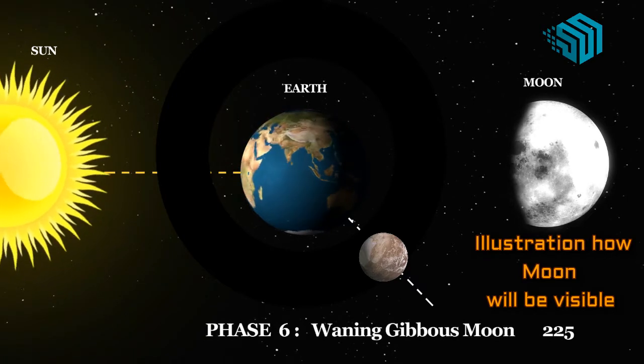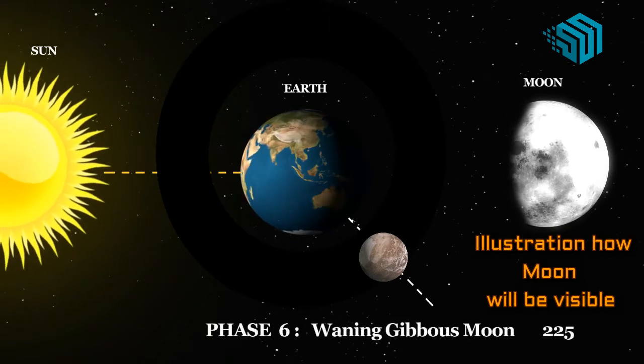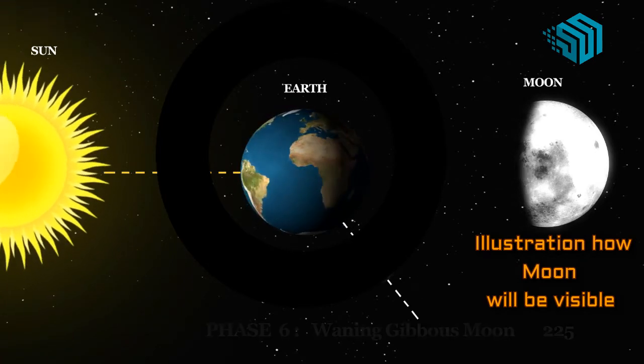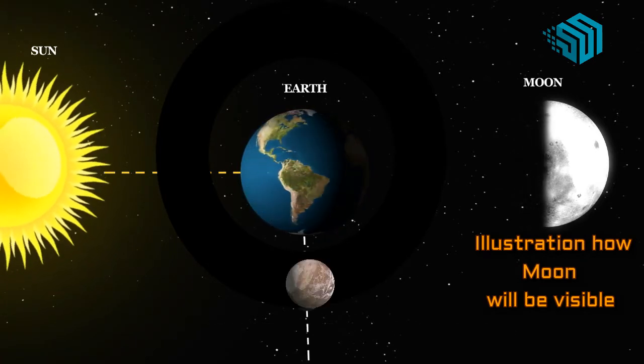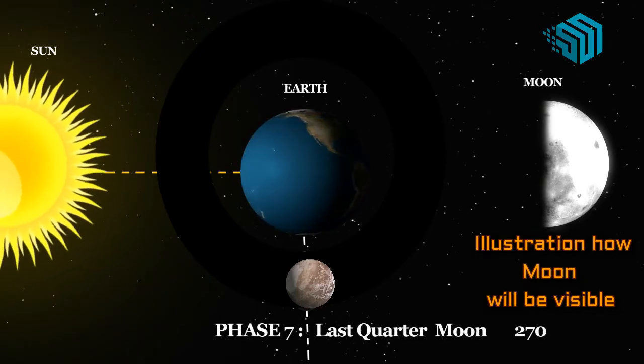Phase six, waning gibbous. The moon is not quite lit up all the way by sunlight. The part of the moon that is lit is slowly getting smaller. Waning means to slowly get smaller.